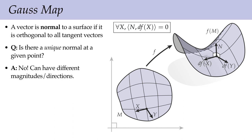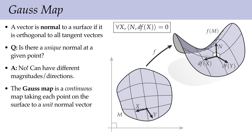The idea of the Gauss map is to really pin down a canonical definition of the normal for the surface. We say the Gauss map is a continuous map taking each point on the surface to a unit normal vector. Two important things: first, we only care about the direction — forget the magnitude — so n is unit at every point. Second, as we move around on the surface, the direction of the normal shouldn't suddenly flip: it's a continuous assignment of normals to points on the surface.